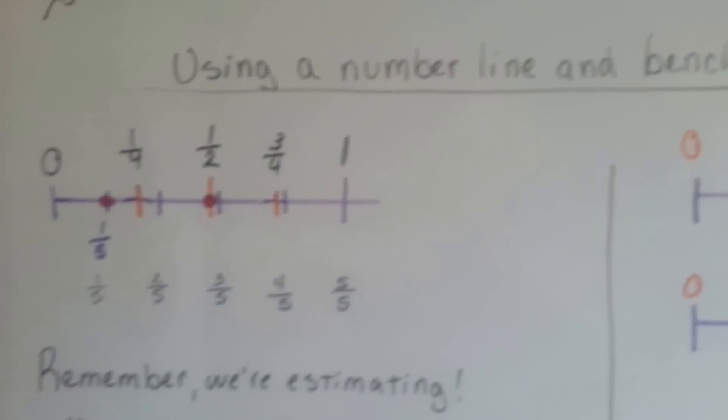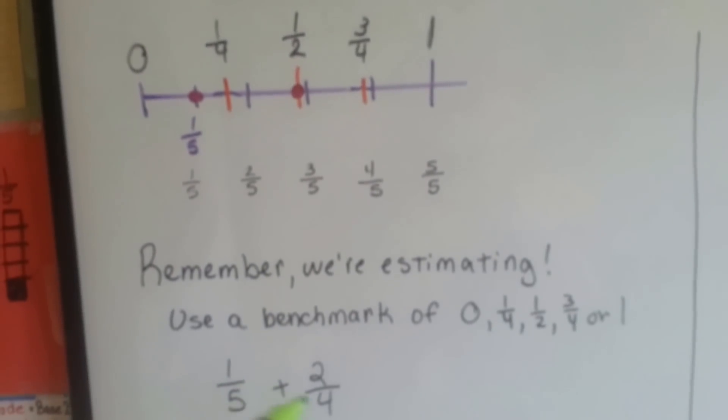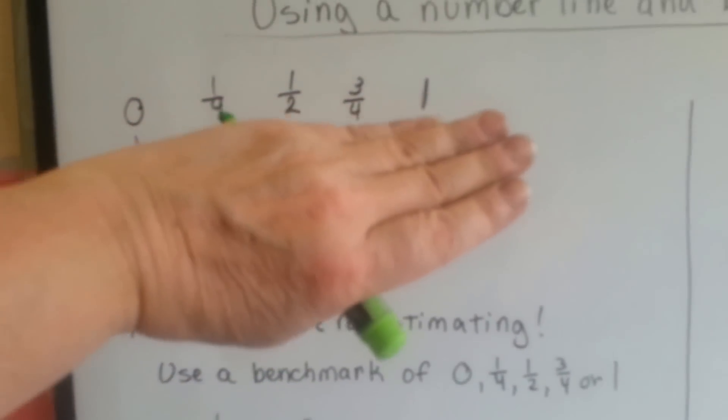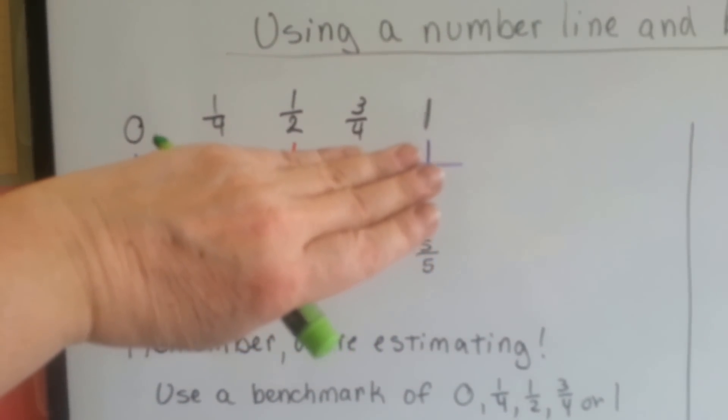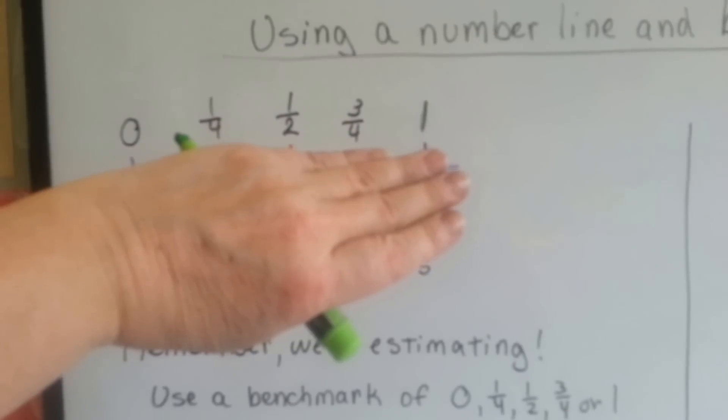Using a number line and benchmarks, if we wanted to add 1 fifth plus 2 fourths, and we created benchmarks of 0, 1 fourth, 1 half, 3 fourths, and 1, because these are easy benchmarks,